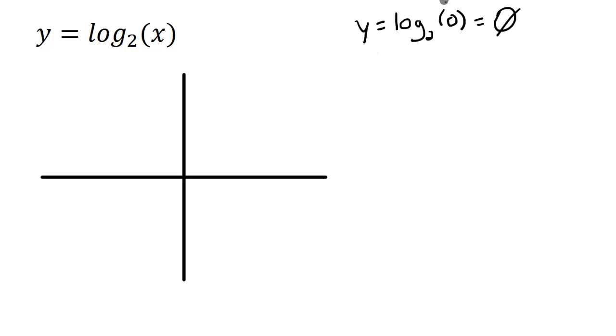If you ask why would that be no solution, it's because if we switch this to exponential form, that would be 2 to the y power equals 0. What can we plug in for y to get 0? There's nothing at all. If you plugged in a 0 for y, you would get 1. If you plugged in a 1, you'd get 2. So nothing would work. That's why it's no solution. Let's go 1 higher. Let's just pick x equals 1.